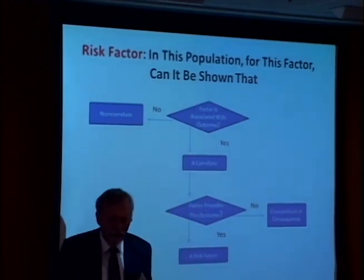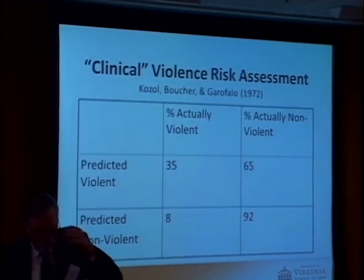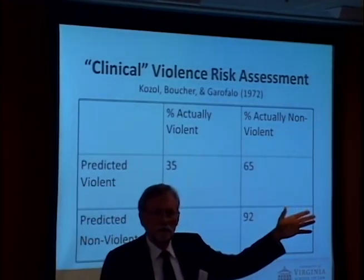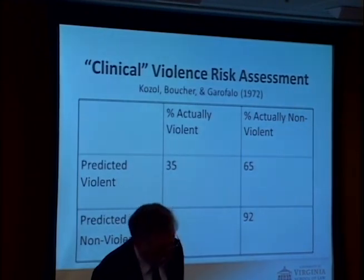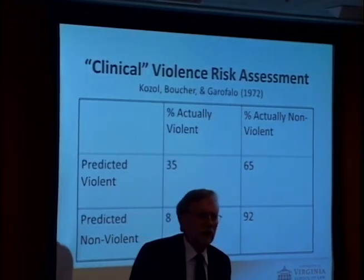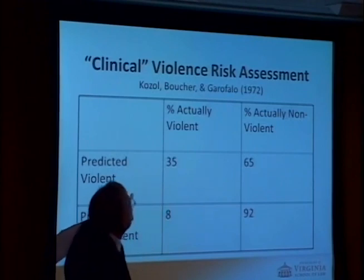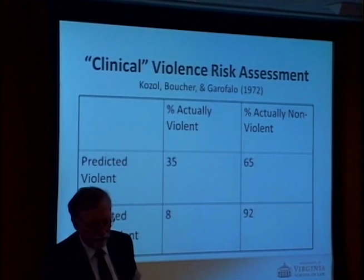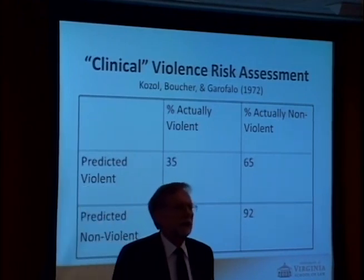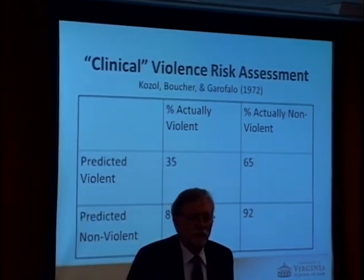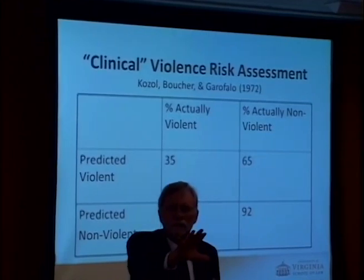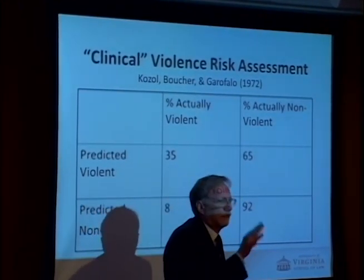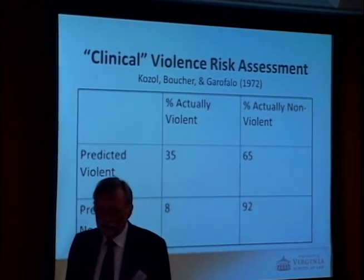In terms of approaches to the field, current approaches go from very clinical, depending on experts, to much more structured. Clinical prediction has been around for a long time. This study was done in Maryland in 1972 — one of the first and still one of the best. It was done on people sentenced for a violent crime to indeterminate sentences, who were then sent to a place in Maryland and evaluated for several months by a team of psychiatrists and psychologists.